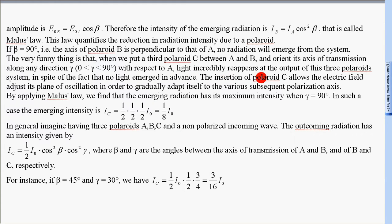The insertion of polaroid C allows the electric field to adjust its plane of oscillation in order to gradually adapt itself to the various subsequent polarisation axes.